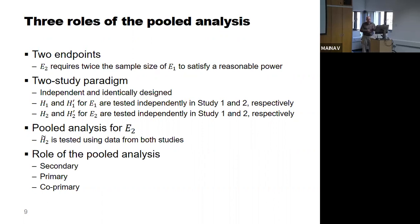We will have different strategies depending on the role of the pooled analysis. The most common situation we've seen is the pooled analysis as a secondary analysis — that's where I'll start. We'll also discuss primary and co-primary endpoint situations, though no real applications of those have been encountered yet. We're going through three cases — secondary, primary, and co-primary — providing ideas for testing within each study and across studies while controlling both family-wise and submission-wise error rates.